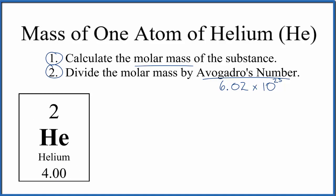That's 4.00 grams per mole - those are the units for molar mass. So we have 4.00 grams per mole, which means if we had one mole of helium, it would have a mass of four grams.